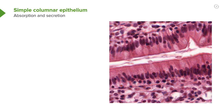Here is a simple columnar epithelium, again specialized for absorption and secretion. Often when the cell is very very busy, they get very tall and the nucleus packs down to the basal area of the cell. If you look at the shape of these nuclei, they're elongated towards the luminal surface. Elongated nuclei are a fairly good indication that the cells are columnar, whereas rounded nuclei indicate the epithelium is a cuboidal type.